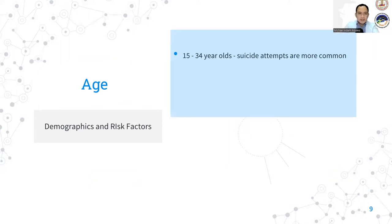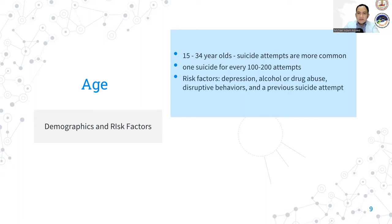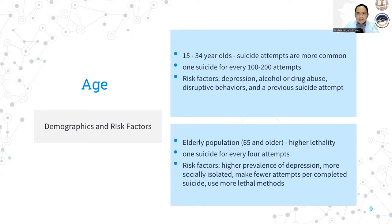Among age groups, among 15 to 34 year olds, suicide attempts are more common. There is one completed suicide for every 100 to 200 attempts. Risk factors involve depression, alcohol, drug abuse, disruptive behaviors, and a previous suicide attempt. Among the elderly population, there is a higher lethality for suicide. They complete one suicide for every four attempts. Risk factors include having a higher prevalence of severe depression. They are more socially isolated, they make fewer attempts for completed suicide, and they use more lethal methods.